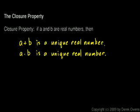But it also says that the sum of two numbers is unique. That means there's only one number that is the sum of any two other particular numbers. And the same thing is true for multiplication. There's only one real number that is the product of any two particular real numbers.